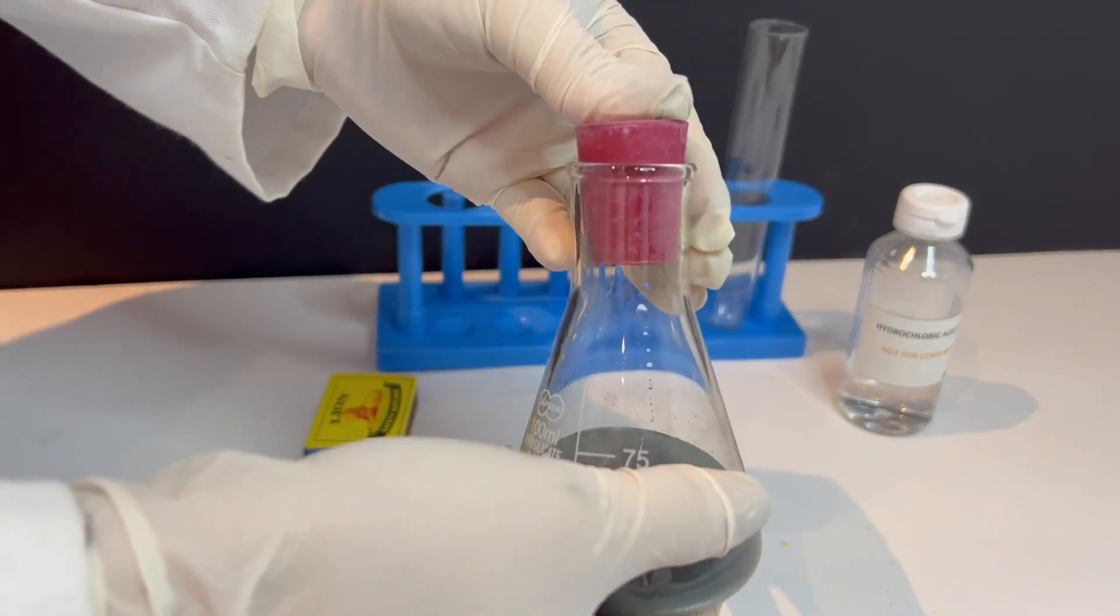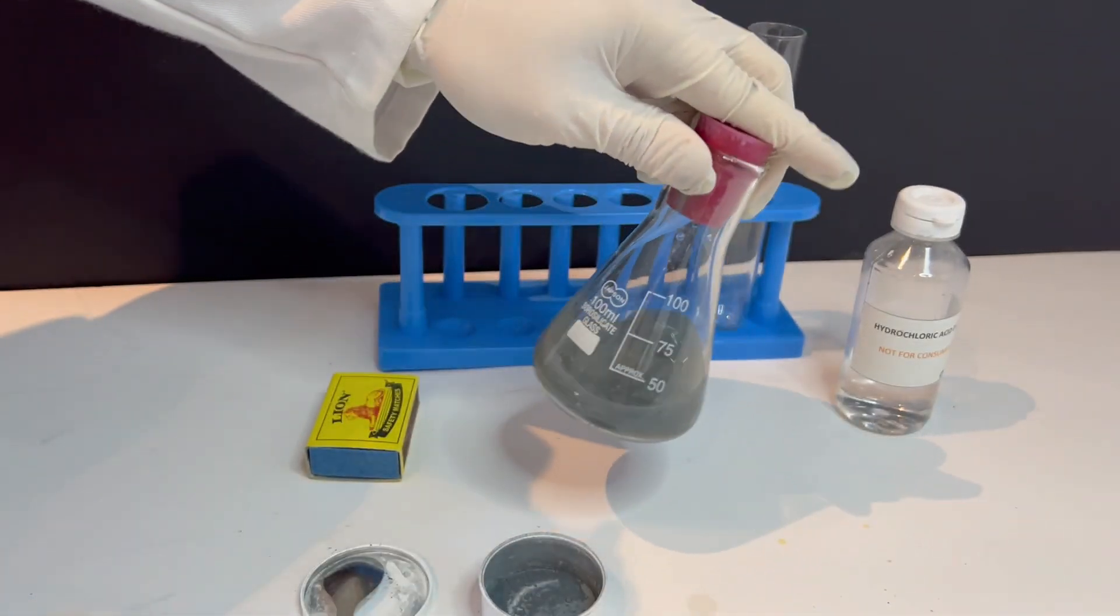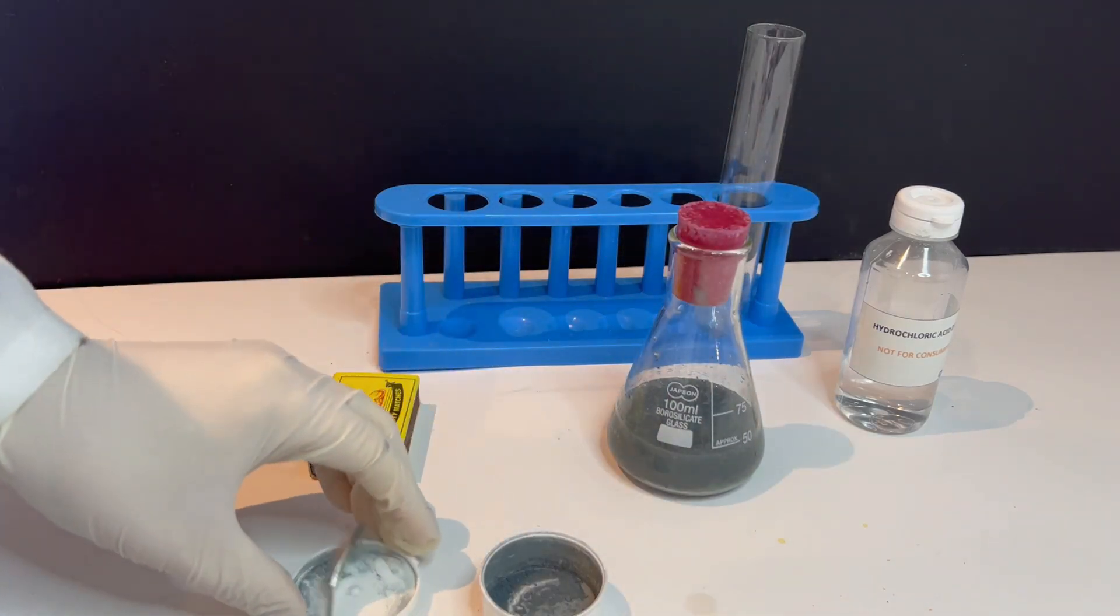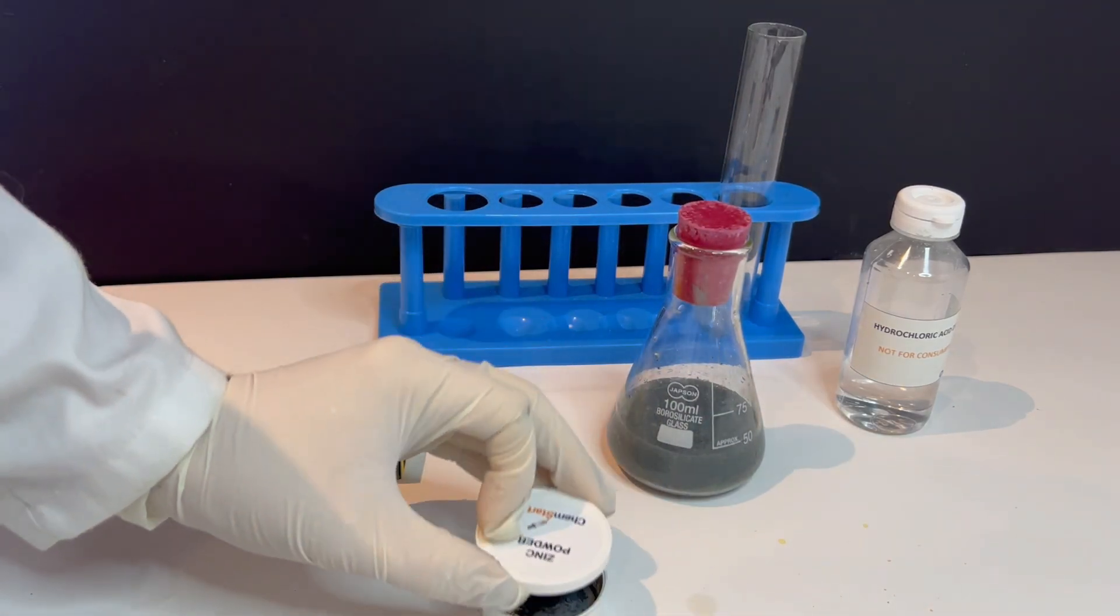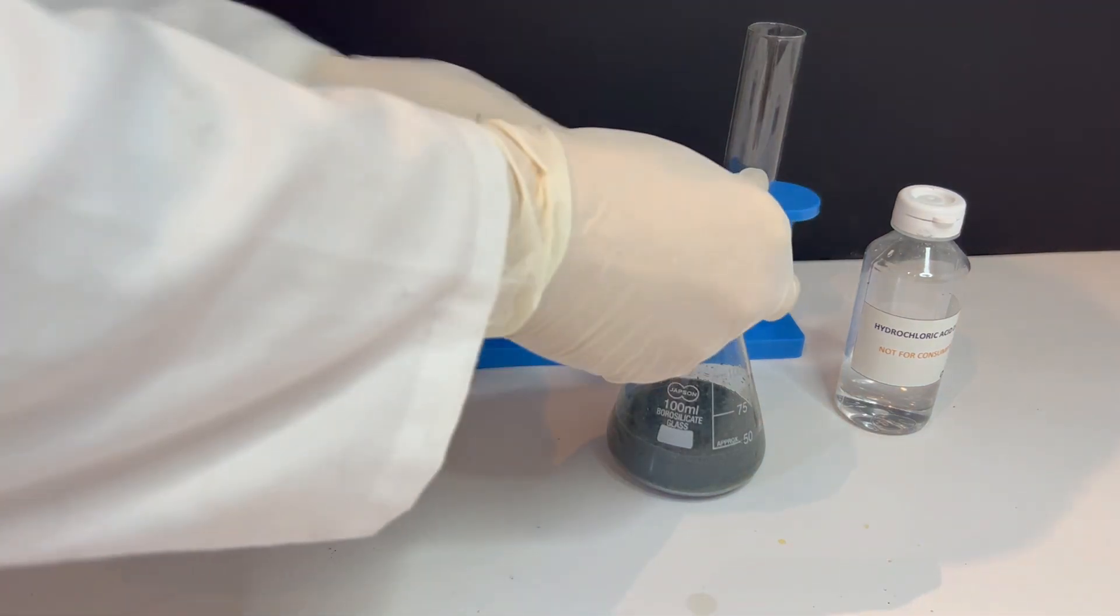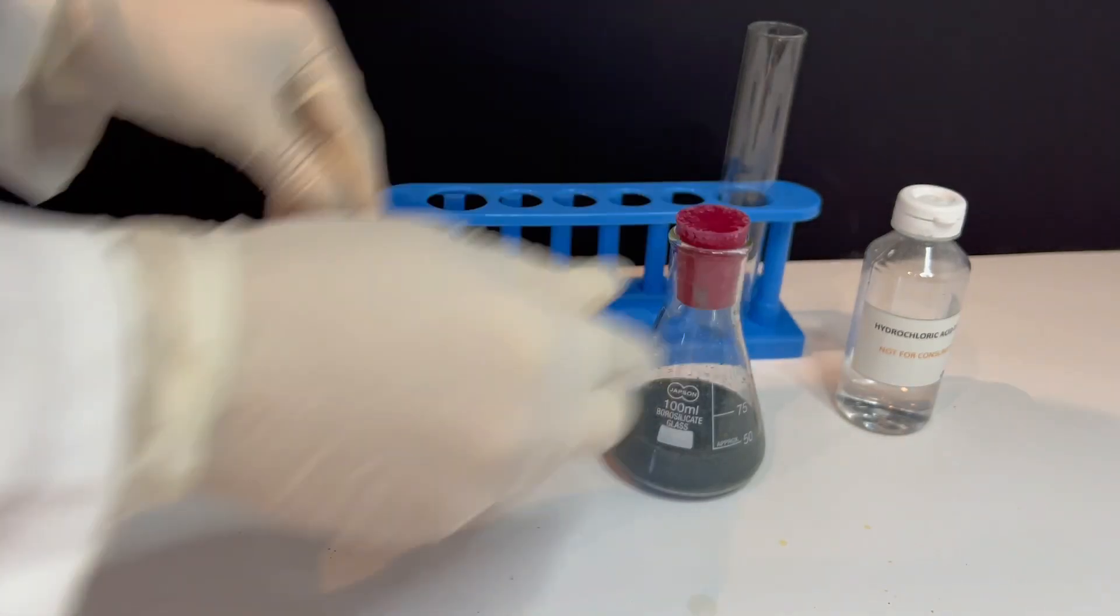That gas is hydrogen. The zinc reacts with hydrochloric acid to form zinc chloride, which stays dissolved in the solution, and hydrogen gas, which escapes as bubbles. So here's the word equation: zinc plus hydrochloric acid gives us zinc chloride plus hydrogen gas.